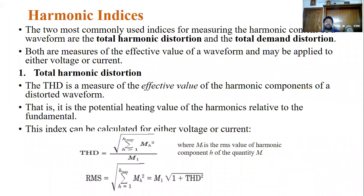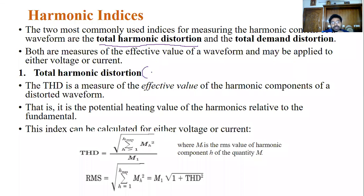Now we come to harmonic indices — that is, how to calculate harmonics and measure how much harmonics are present in the system. We call these harmonic indices. Harmonic indices can be calculated in two ways: the first is Total Harmonic Distortion (THD), and the second is Total Demand Distortion (TDD). These two are the measures or indices used to calculate harmonics in the system, and they can be calculated for both voltage and current.